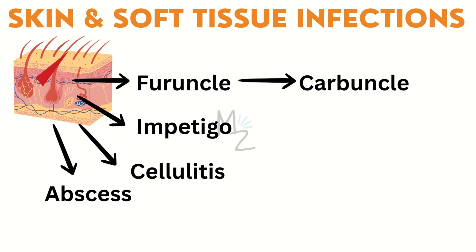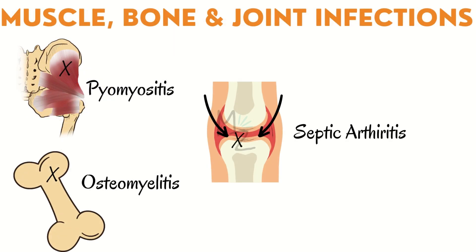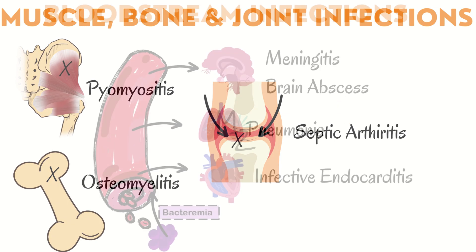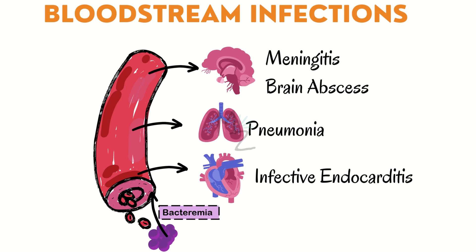Muscle, bone, and joint infections: when infection spreads to the muscle it causes pyomyositis; when it spreads to bones it causes osteomyelitis; and when infection and inflammation involve the joints it causes septic arthritis.